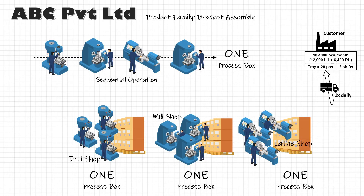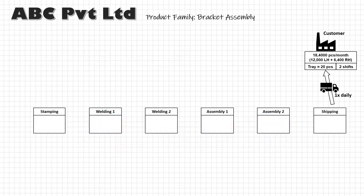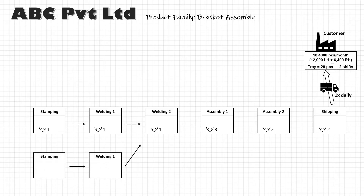So in ABC, we have identified six processes. Now let's add the operator symbol to note down the number of operators working in each process step. In your organization, many value streams may have multiple flows that merge together — in that case, you may have to draw it accordingly. But do not overdo it; take only those streams where the lead time is more. That is why it was recommended to do a quick walk before you start the map.